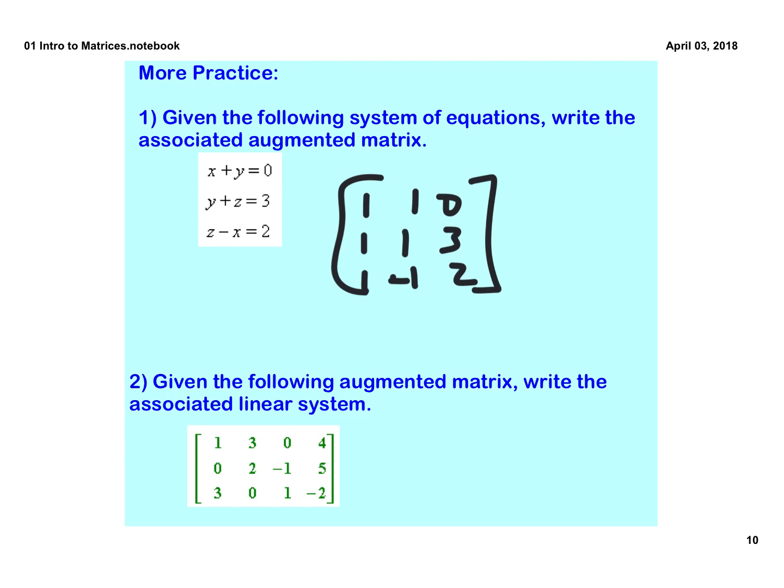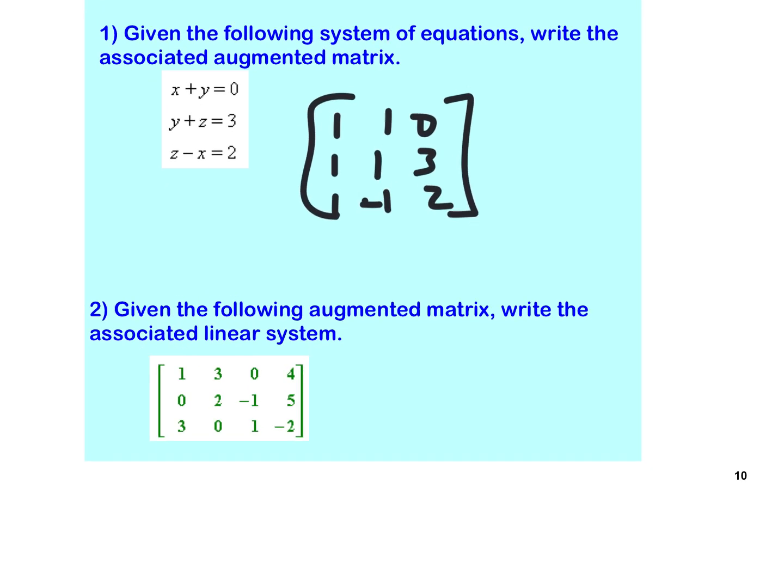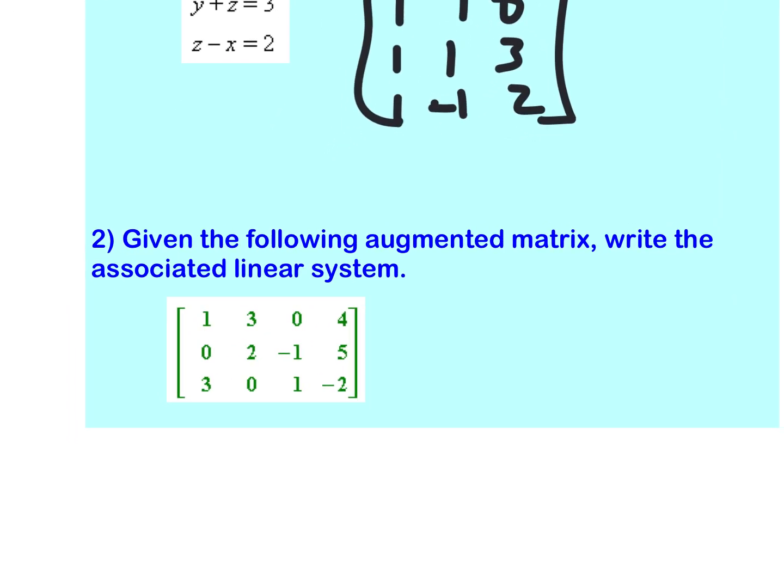Yep, all right. Now they're going to ask you to go backwards, and I think you'd be able to do this. This is the x, this is the y, this is the z, and then it equals four. All right, so now I'm going to move on.